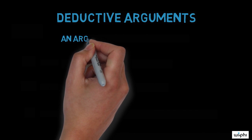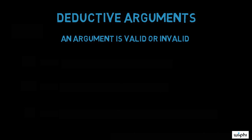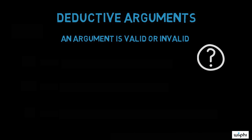So an argument is valid or invalid. Validity, then, isn't a property of statements or anything of the like. So what exactly is a valid argument then?